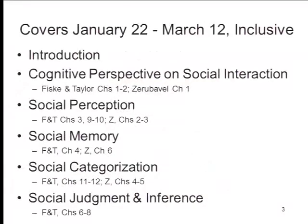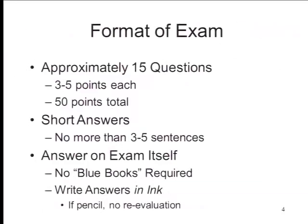The exam itself is going to cover everything we've covered so far, from the very first introductory lecture through next Wednesday's lecture — the concluding lecture on social judgment and inference — and also the material in the corresponding chapters. It's going to look like about a 15-question short-answer exam, worth 3 to 5 points each, for a total 50-point exam.